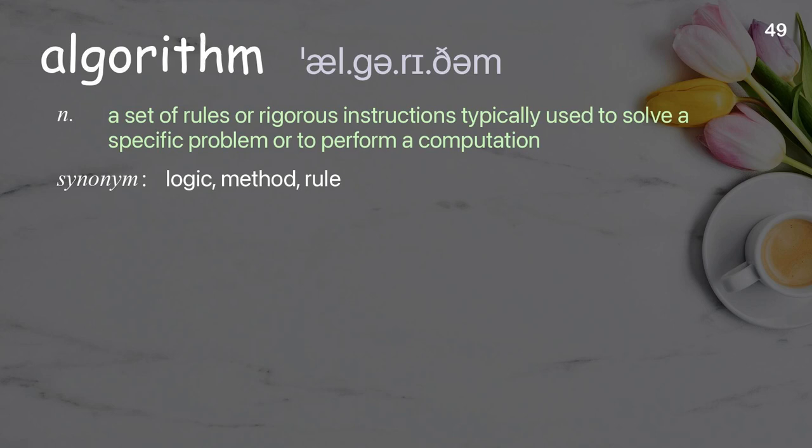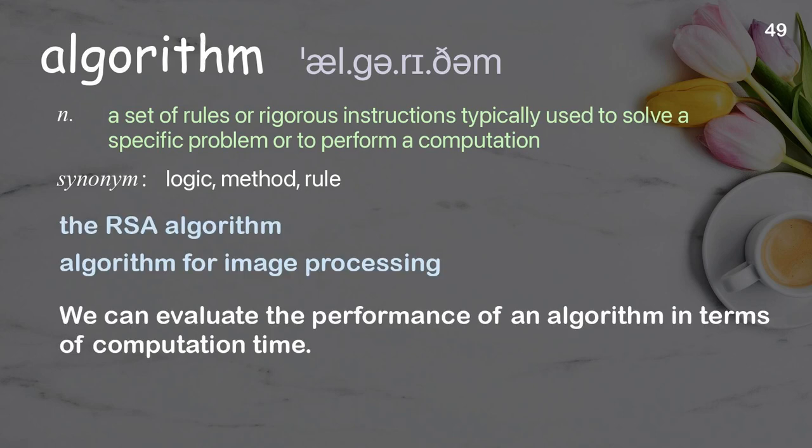Algorithm: a set of rules or rigorous instructions, typically used to solve a specific problem or to perform a computation. Examples: the RSA algorithm; algorithm for image processing; we can evaluate the performance of an algorithm in terms of computation time.